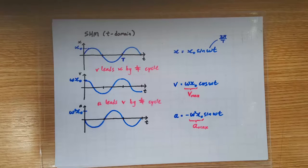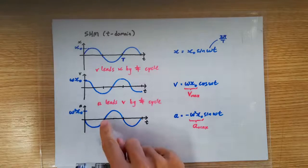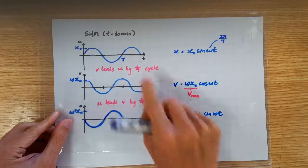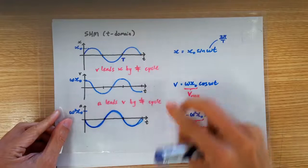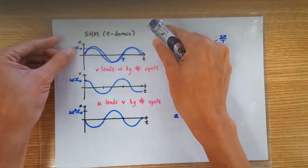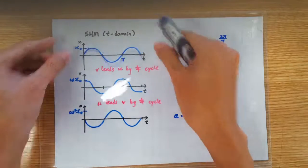What's more important is the relationship between acceleration and displacement. Notice that the acceleration and the displacement time graph are just opposite of each other.